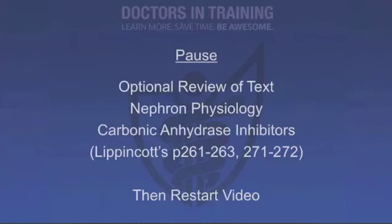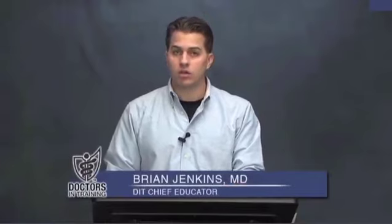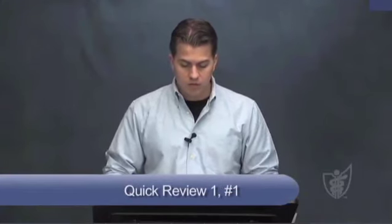Now let's pause and review the material. Before we do that, this might be a good time to read your pharmacology text. Then we're going to go through Quick Review 1 in your study guide. Let's review some key points of nephron physiology, including acetazolamide. To understand the mechanism of action of diuretics, you need to know a little about nephron physiology.